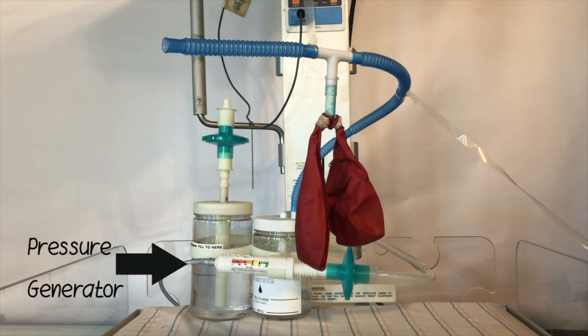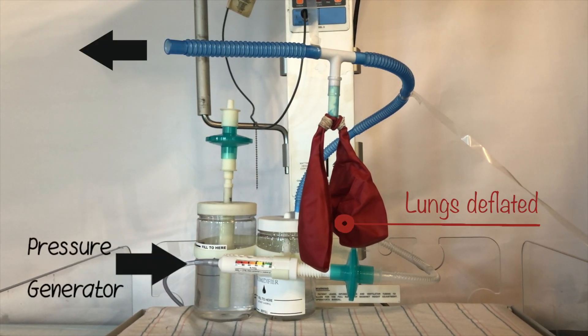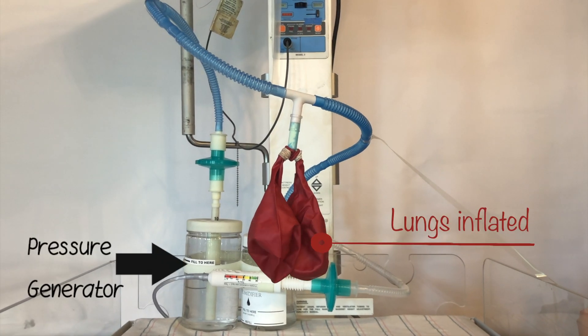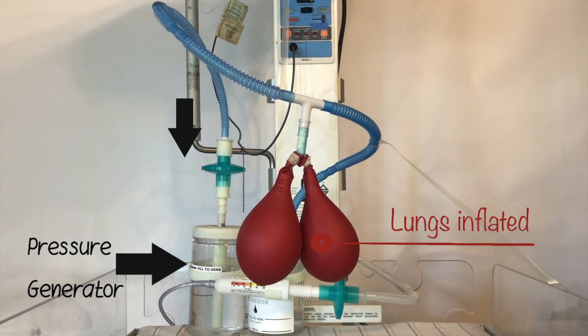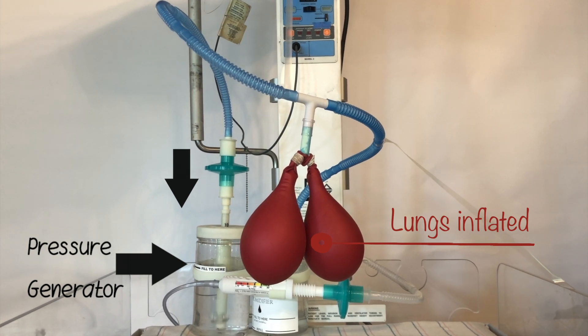When the circuit is not connected to the pressure generator, the gas escapes from the open end of the tubing. But when the system is fully attached, the gas must escape by bubbling out through the water in the pressure generator, which creates the positive pressure in the lung.